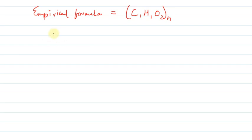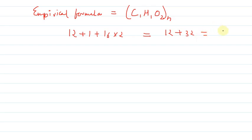If we need to find the molecular formula from this, we first calculate the mass of this empirical formula. The empirical formula mass: carbon is 12, plus hydrogen is 1, and oxygen is 16 into 2, which is 32. So this comes out to 12 plus 1 plus 32, which is nearly equal to 44 (approximating 12 + 32 = 44).